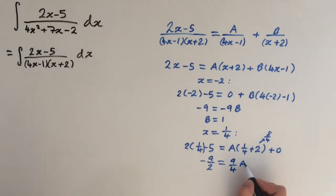And so we need to multiply it by 4 over 9 on both sides. And these two fractions will cancel out. 9's are going to cancel out, and we're going to be left with minus 4 over 2, which means A is going to be minus 2.